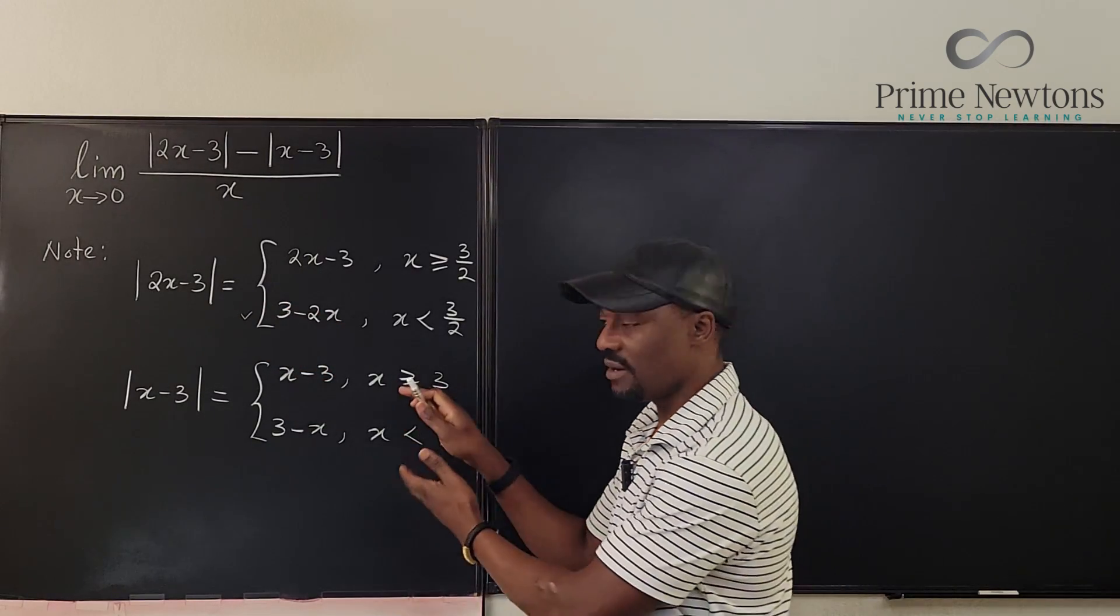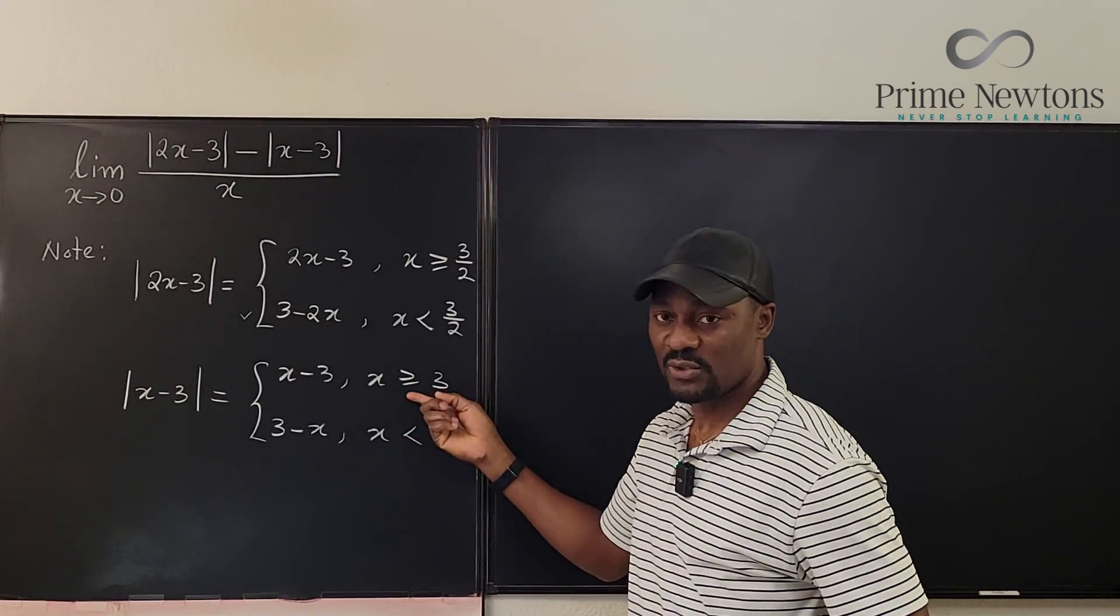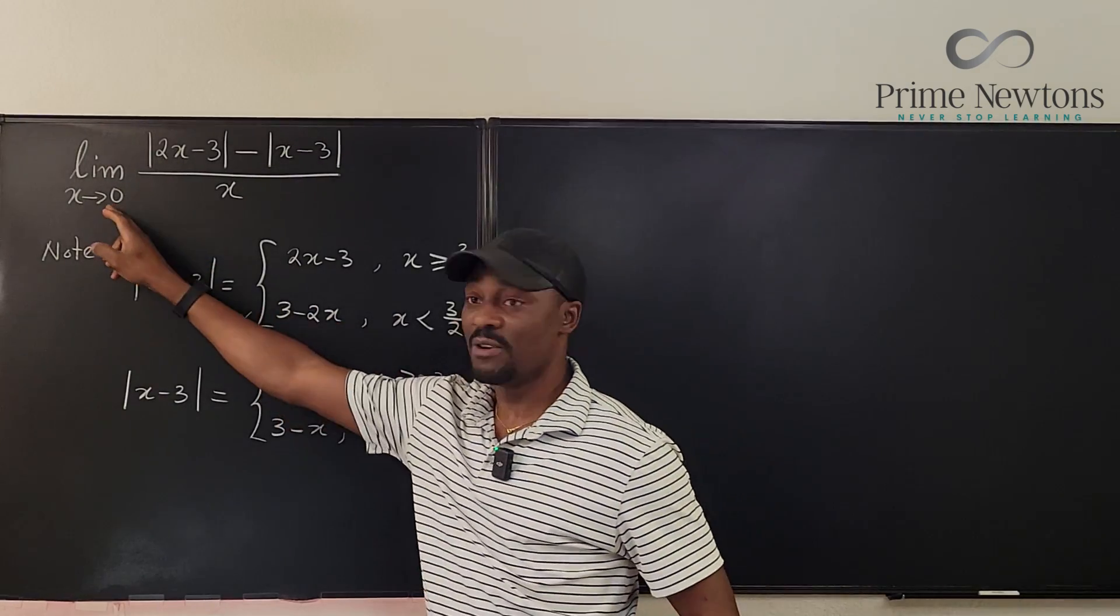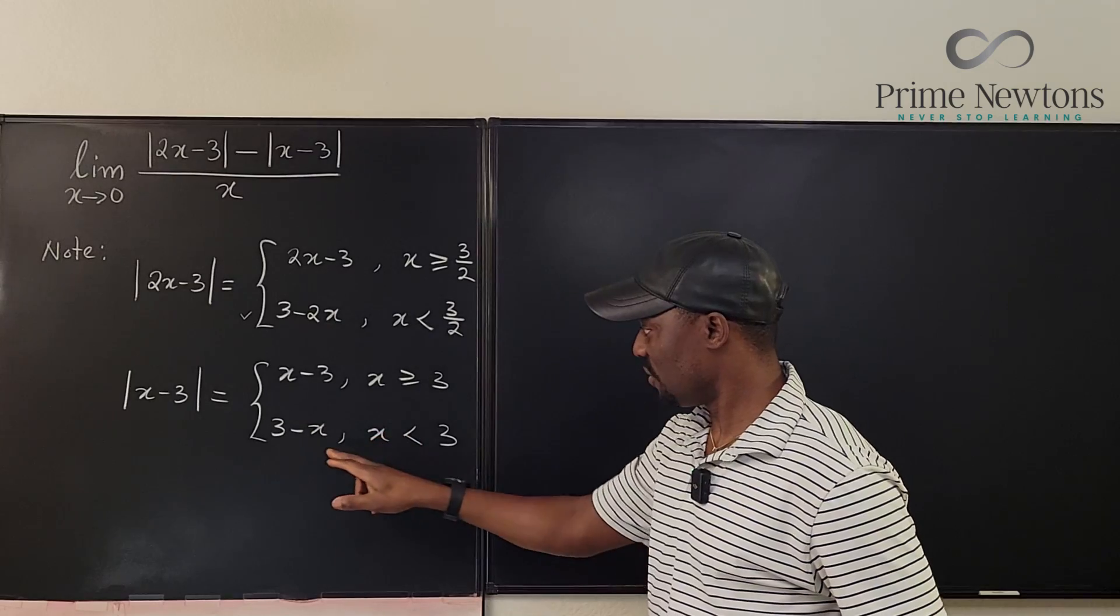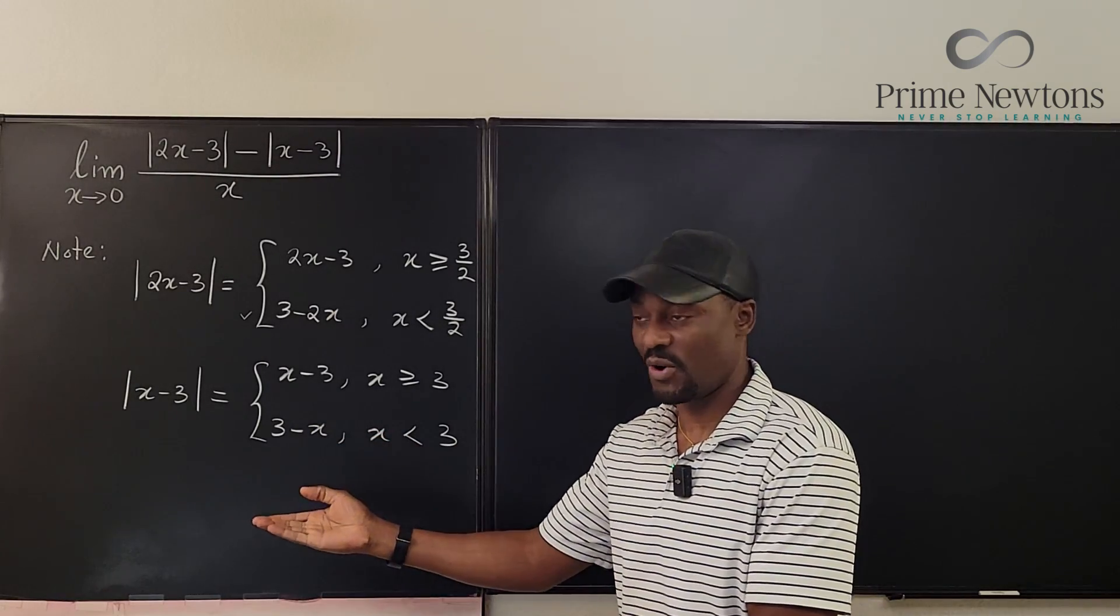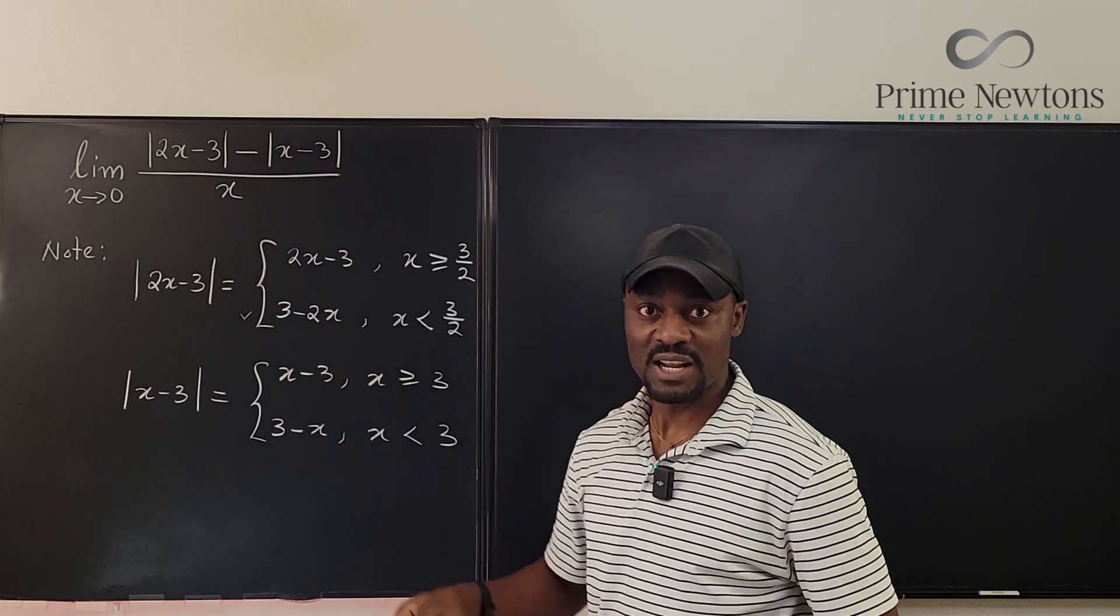Now let's go here. The top part is relevant when x is greater than 3, but now we're referring to zero. So zero is relevant to this one when x is less than 3. That's the only time we can get zero. So if we rewrite this limit...